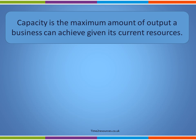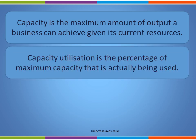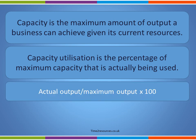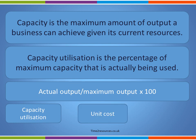The key points: Capacity is the maximum amount of output a business can achieve given its current resources. It is important not to confuse this with capacity utilisation, which is the percentage of maximum capacity that is actually being used — calculated using actual output divided by maximum output multiplied by 100. There are advantages of high capacity utilisation, a key one being a fall in unit cost. However, there are also disadvantages, particularly if a business gets close to full capacity, including quality issues. Capacity utilisation, unit cost, and quality are three operational targets that can be set by a business.